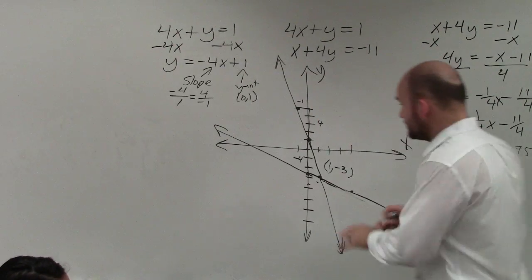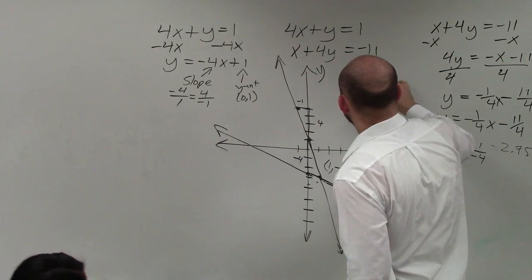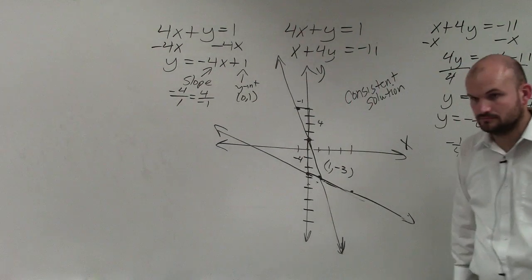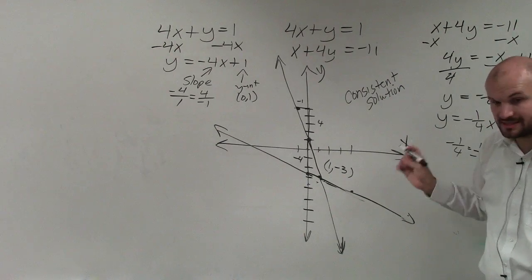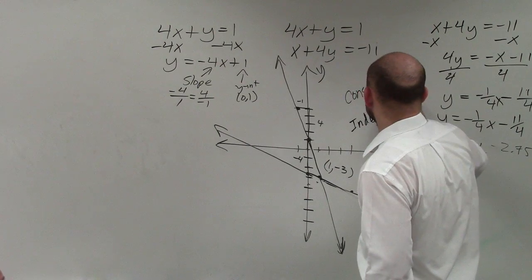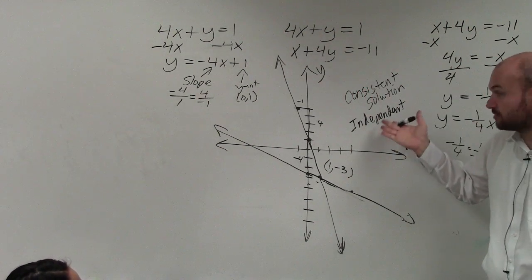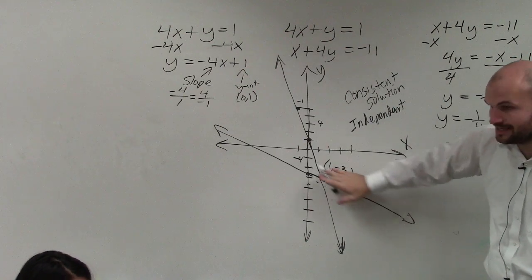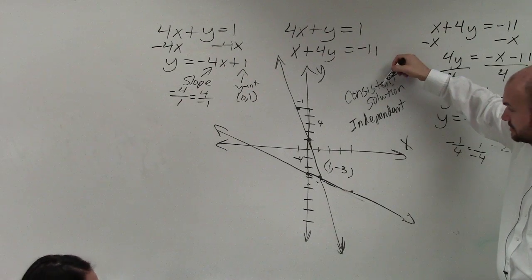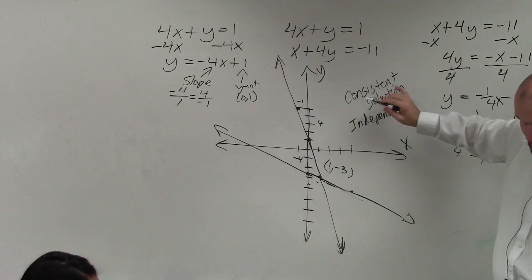So when you have one intersection point, that is what we call a consistent solution. That is a consistent solution. And when it intersects once, it's independent. You guys need to know this. Because for your homework, you're going to be writing these down. So when it intersects once, at any point, it's what we call consistent. And it's independent. You're going to need to write that down on your test and on your homework.